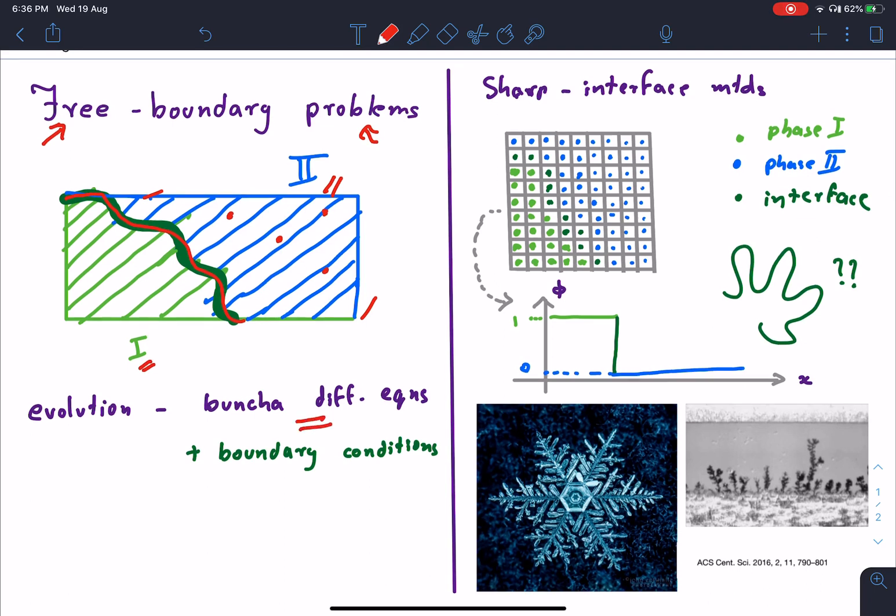The way we go about doing this is to write down differential equations for the evolution of these phases with time, and these differential equations typically come with a set of boundary conditions that need to be applied at this boundary.